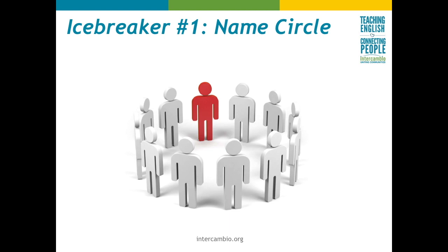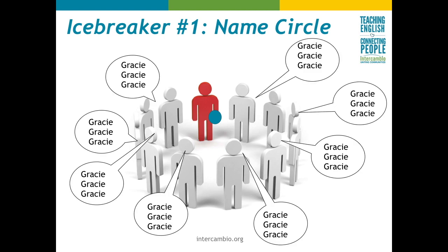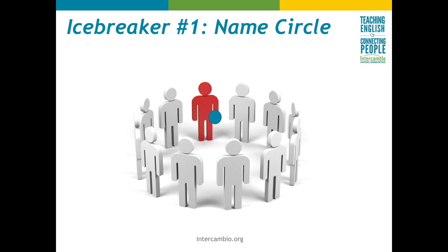Icebreaker activity number one: the name circle. Have everyone stand in a circle and have a ball in your hands. Say your name three times and have the class repeat it three times. Then pass the ball to the left and do the same thing. Repeat until everyone has gone.